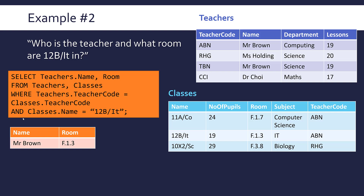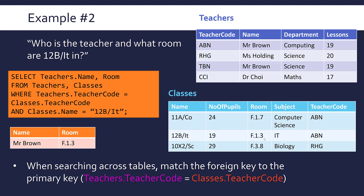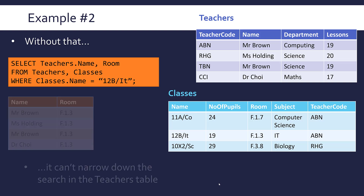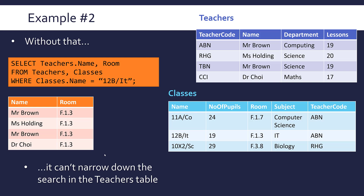We've only got one class called 12BIT because it's a primary key, and we get Mr Brown and F13 correctly. Again, if you omit teachers.teacher_code equals classes.teacher_code, it's not going to be able to match up our records properly. If you only filtered based on 12BIT without the key matching, you'd get all four teachers with the correct room - it doesn't make sense because it can't match up the two tables. So that is important.